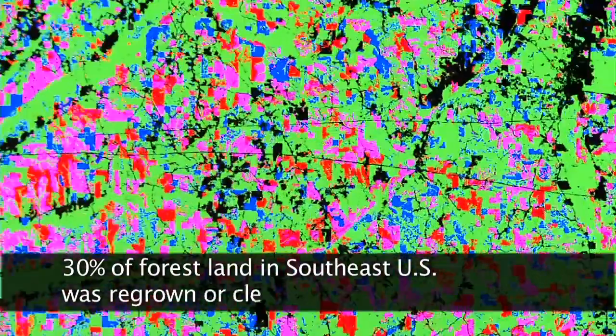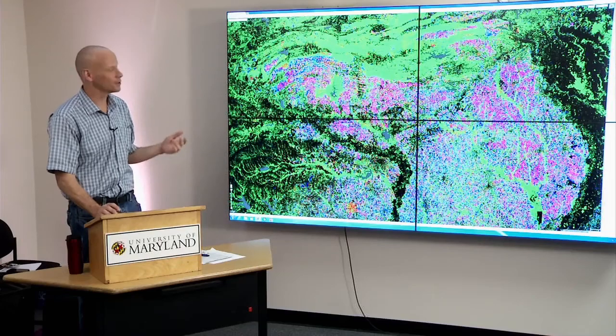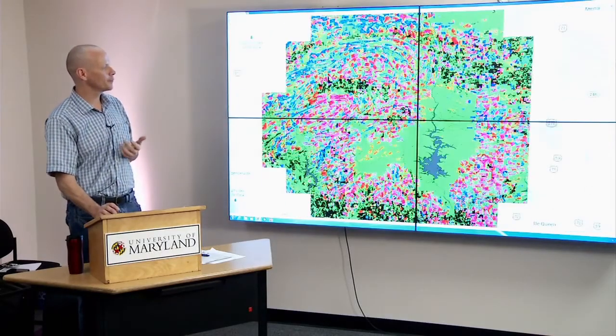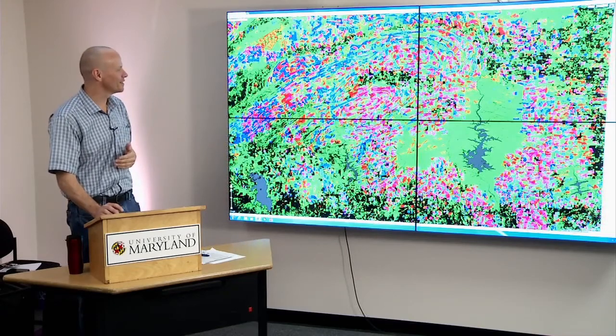Out of this ecozone in the southeast U.S., 30% of forest land either was regrown or lost during this 12-year period. It's incredible. So really, trees are as crops here. You might want to rethink a definition of forest because it's really a different thing. This is not really natural.